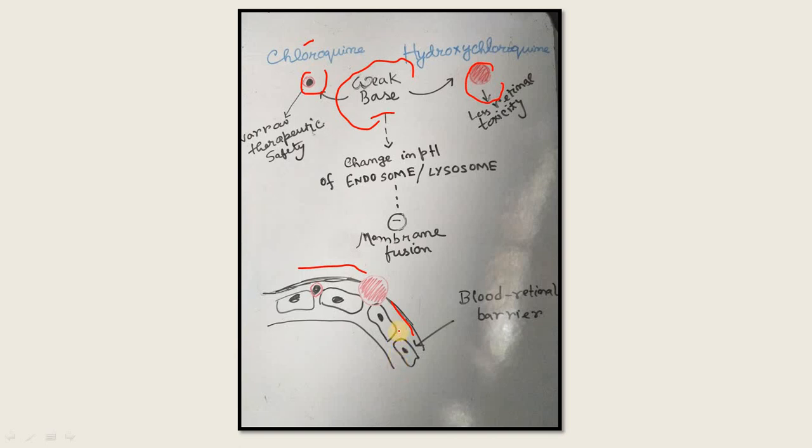The weak base changes the pH of the endosome or lysosome, which is essential for membrane fusion. Here, it is the blood retinal barrier.